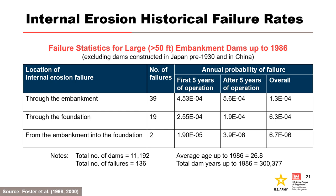Foster and others in 1998 and 2000 examined failures and accidents of large embankment dams constructed between 1800 and 1986. Approximately one half of cases of failure in operation were due to internal erosion. The largest number of failures occurred through the embankment, and nearly one half of these were associated with conduits or walls penetrating the embankment. Approximately two thirds of all failures and one half of all accidents occurred on first filling or in the first five years of reservoir operation. Nearly all failures through the embankment occurred when the reservoir level was at or near the pool of record. For a specific dam, think about factors that make a potential failure mode more or less likely than these historical rates.